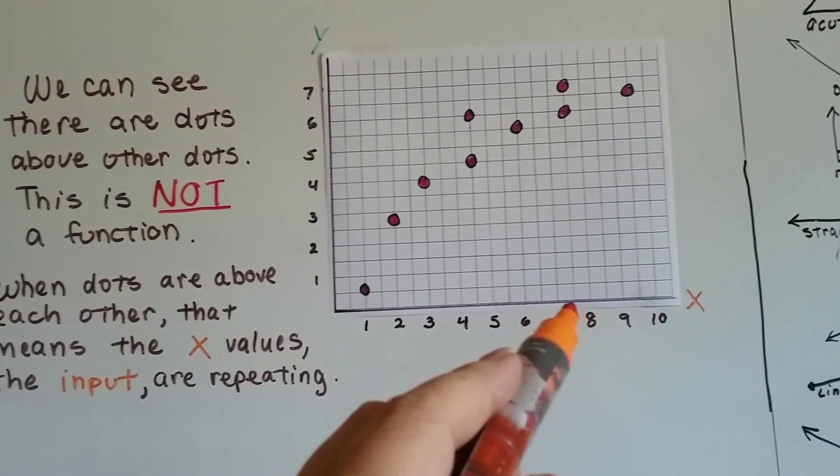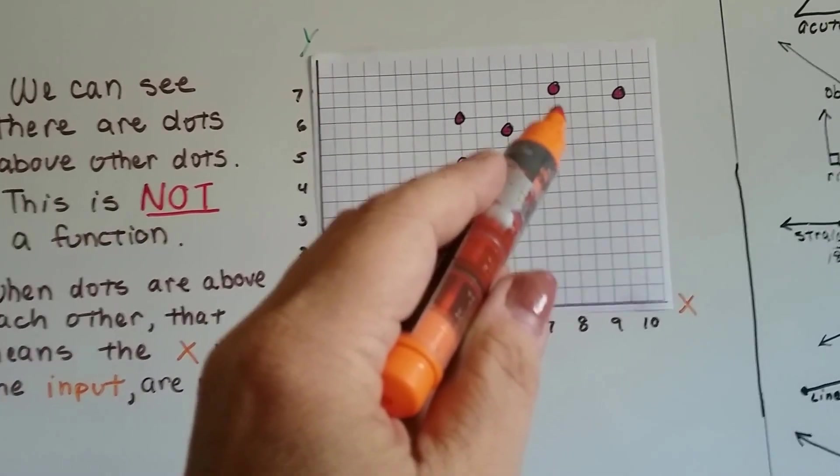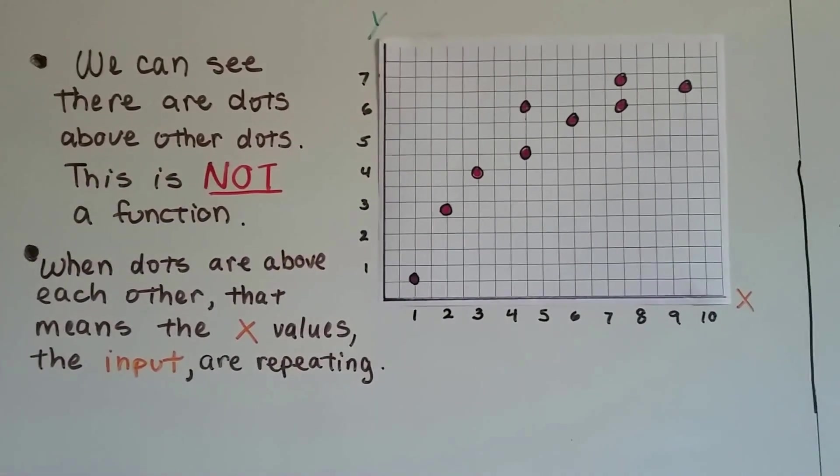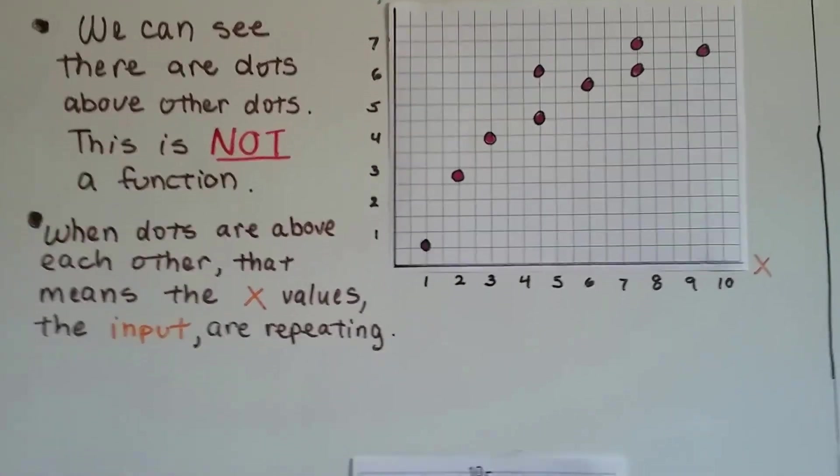And here, it's in between 7 and 8, so it's 7½. So there's a 7½ and a 7½ for the x values. The x's are repeating, so it's not a function.